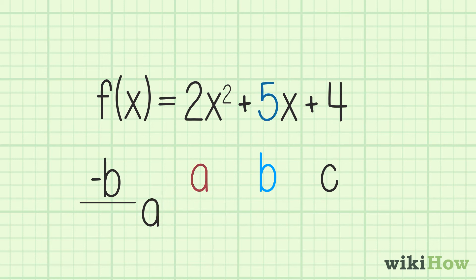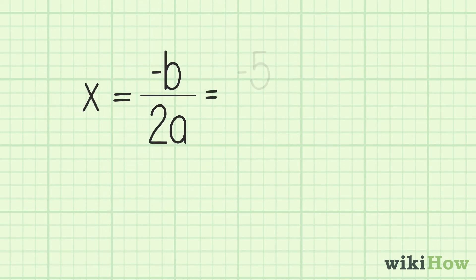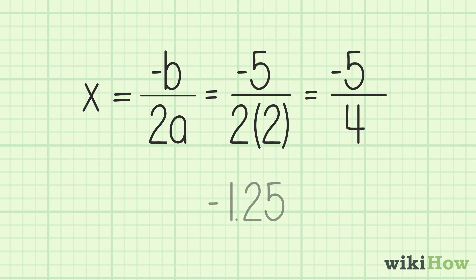b equals 5, and a equals 2. Therefore, you would divide negative 5 by 2 times 2, or 4, and get negative 1.25.